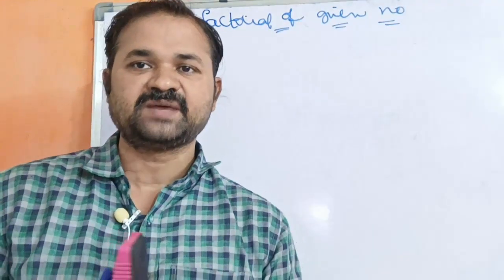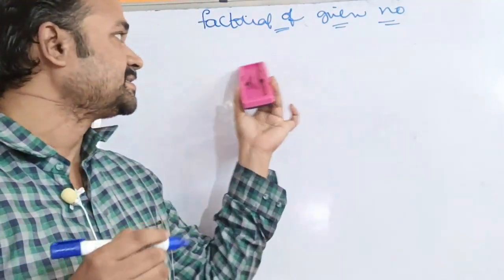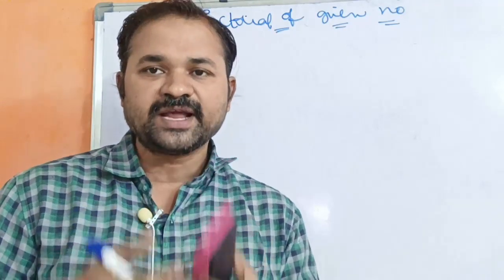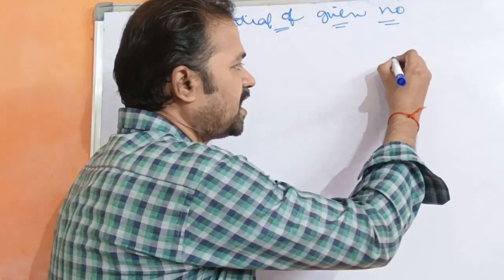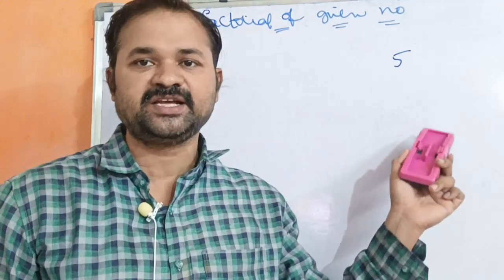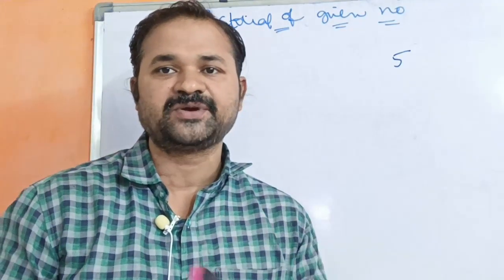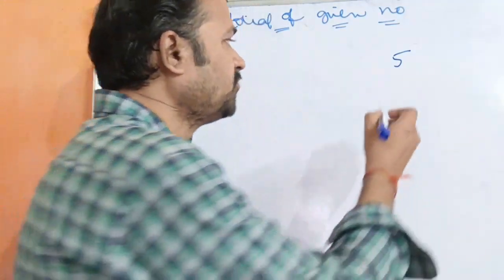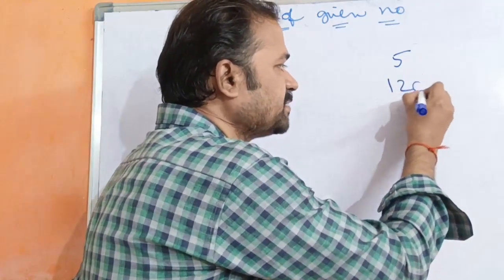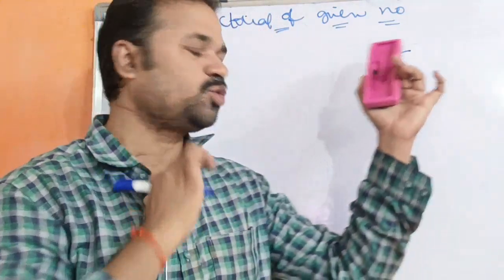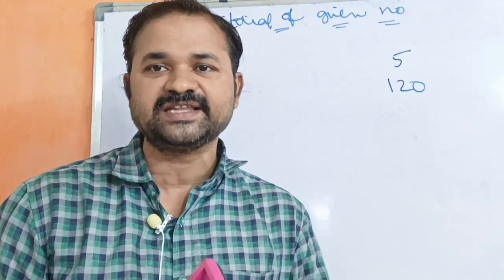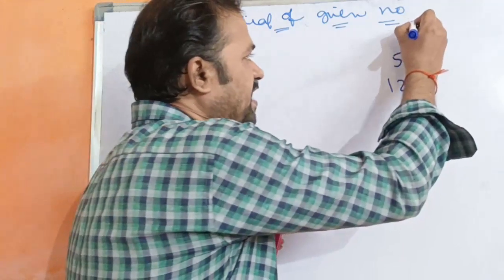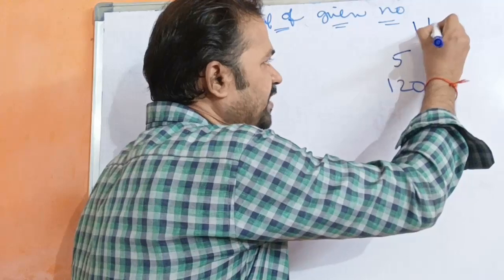Ee program disksha adhamu - C program to print factorial of a given number. Number enter chaste, a number yaka factorial print cheyali. Suppose 5 enter cheste, factorial of 5 anta 120. So 120 print cheyali. So factorial of a given number logic kandhi - factorial of 1 result is 1.